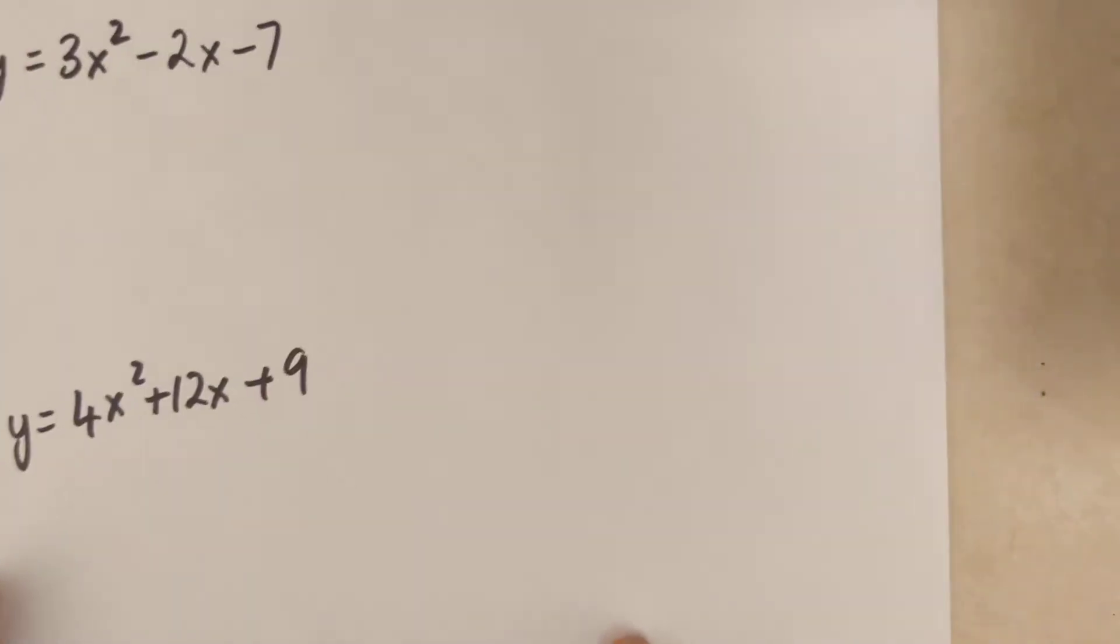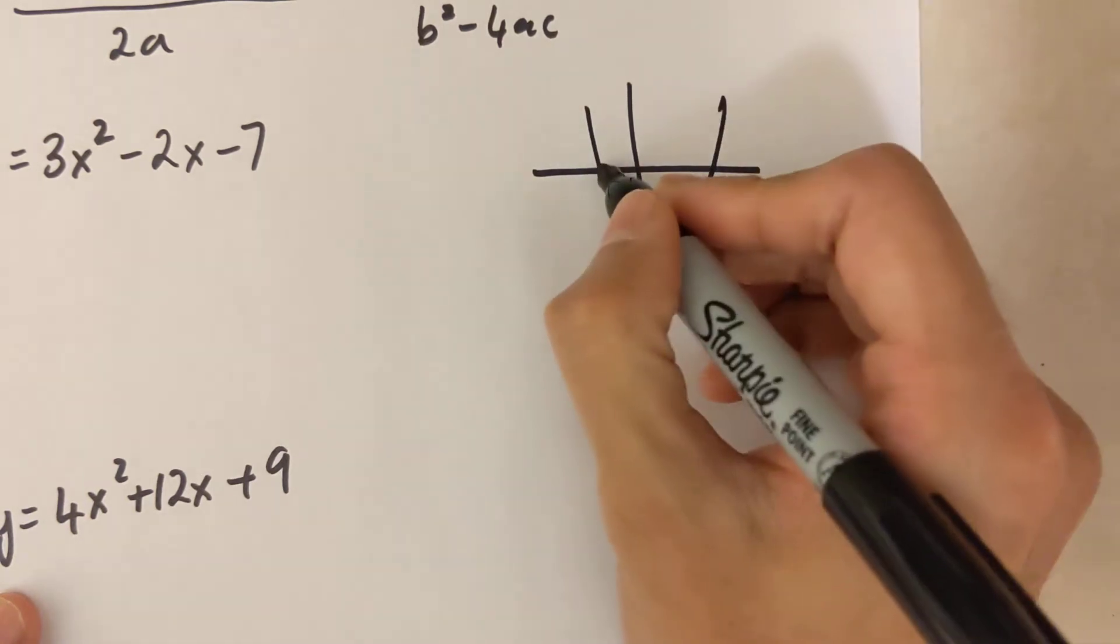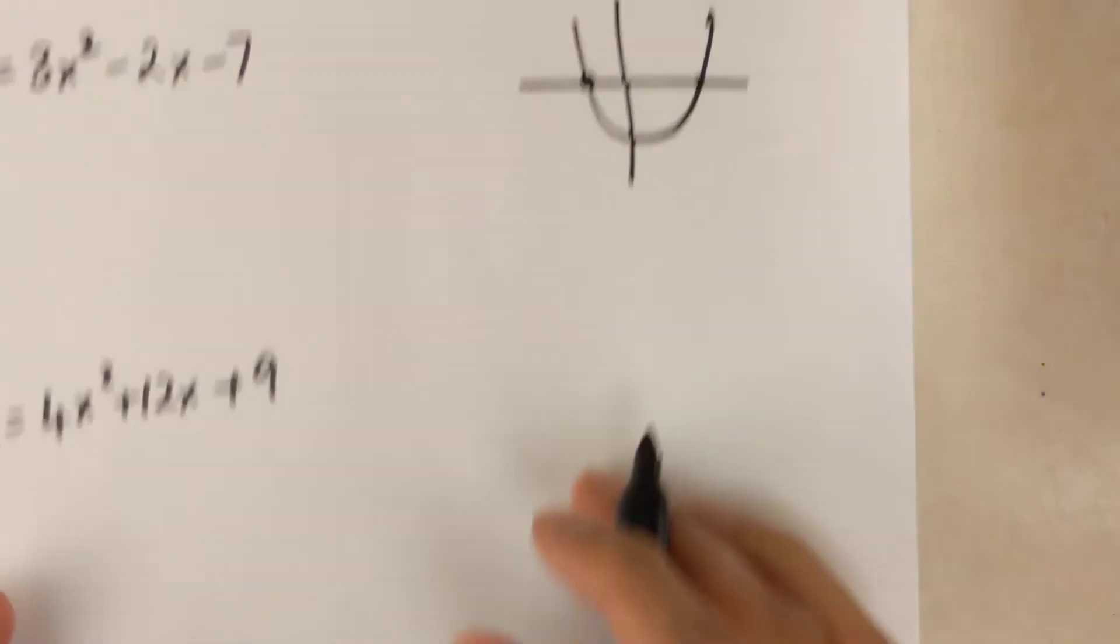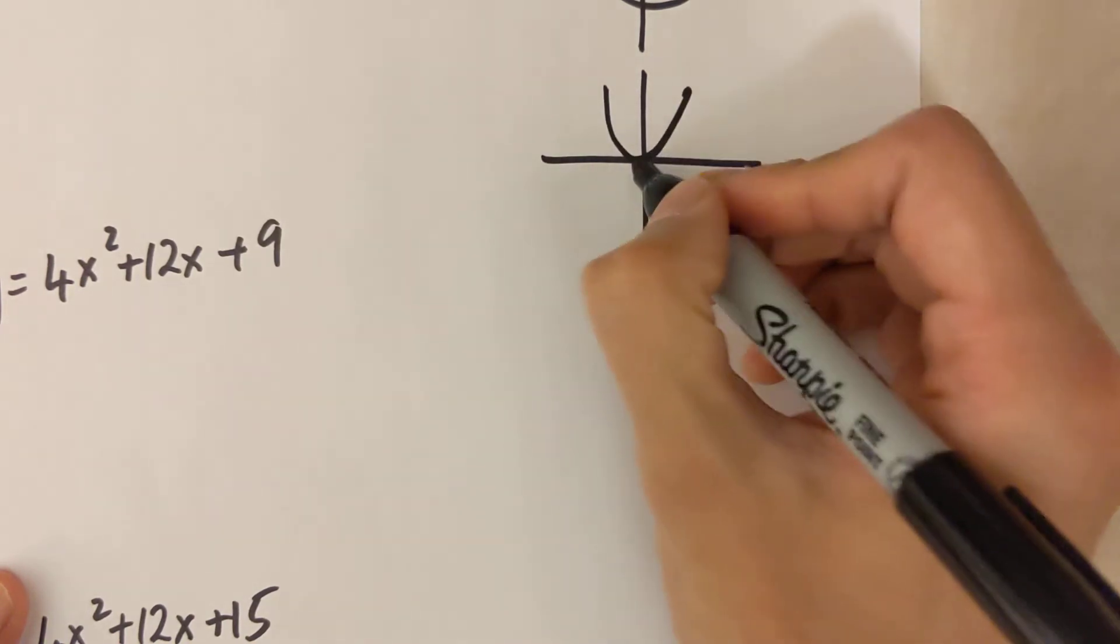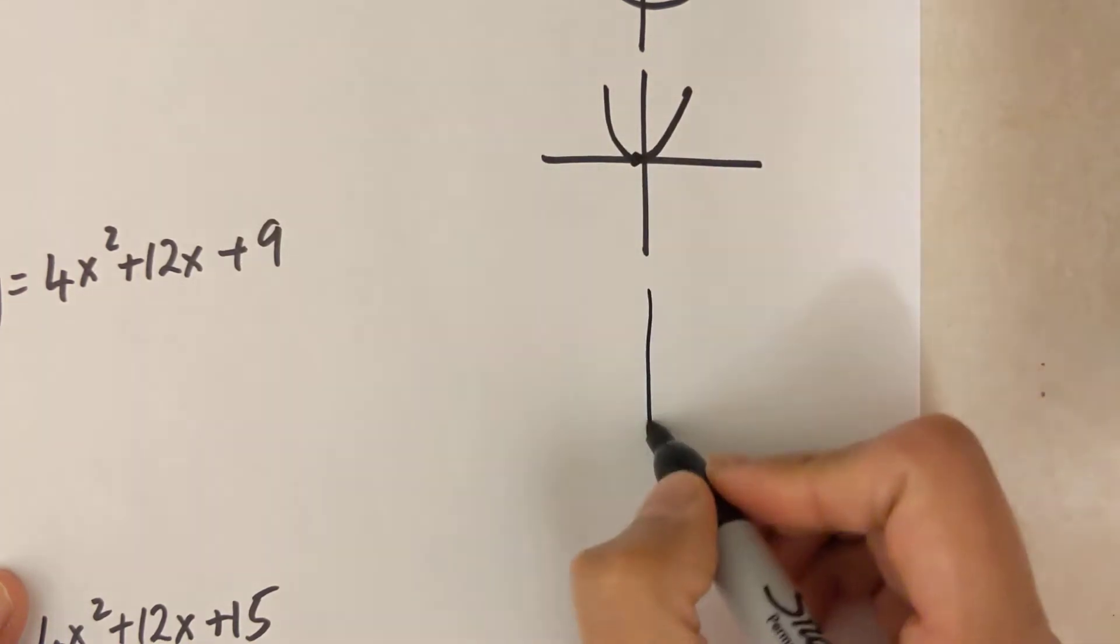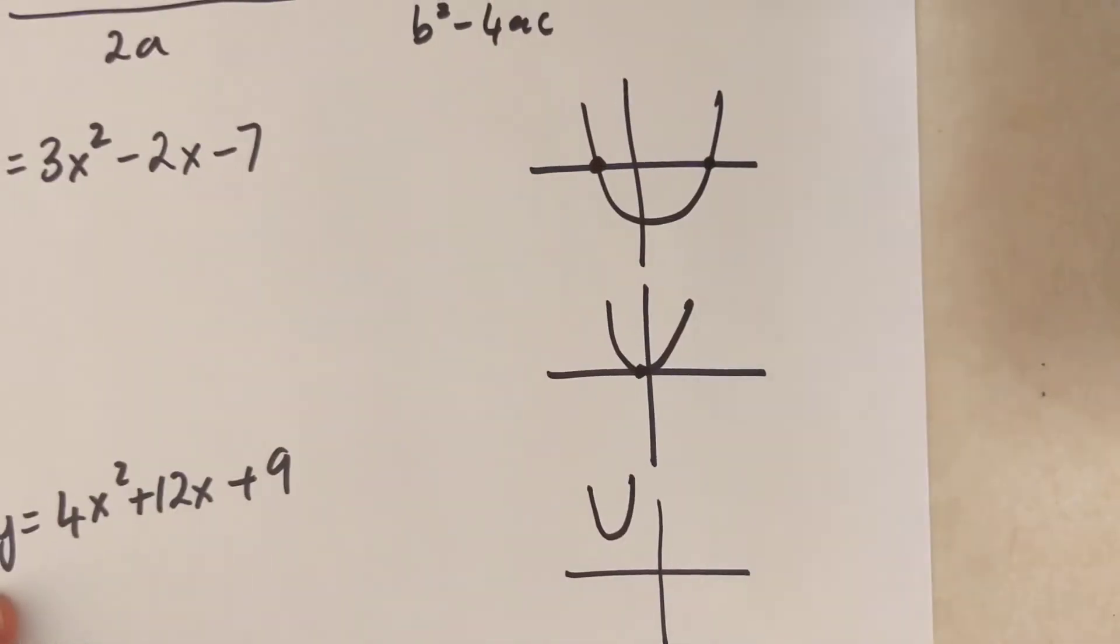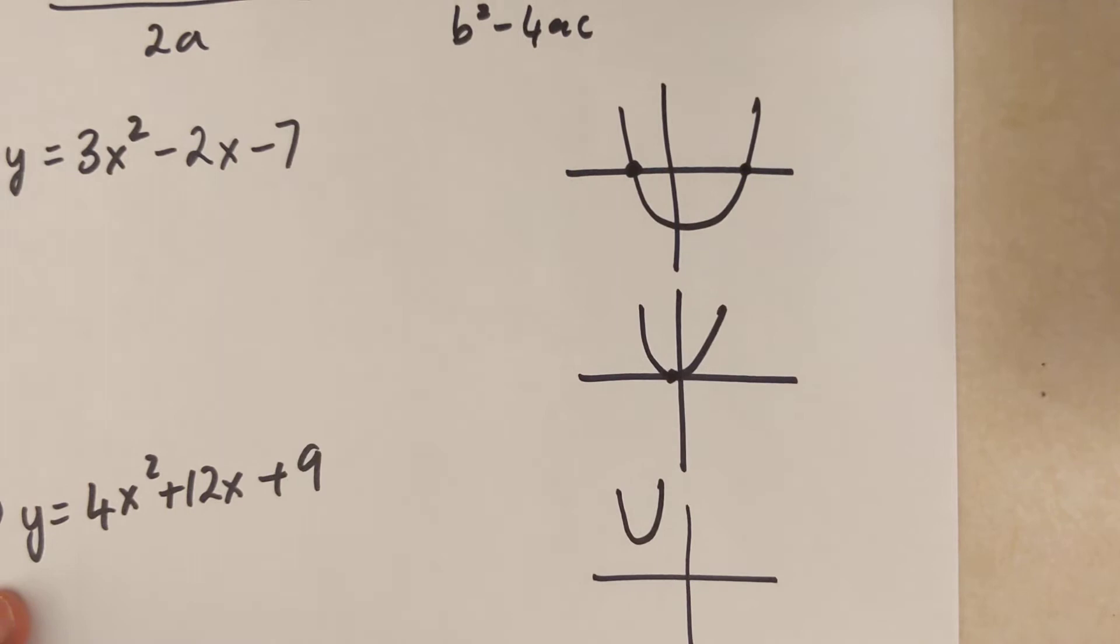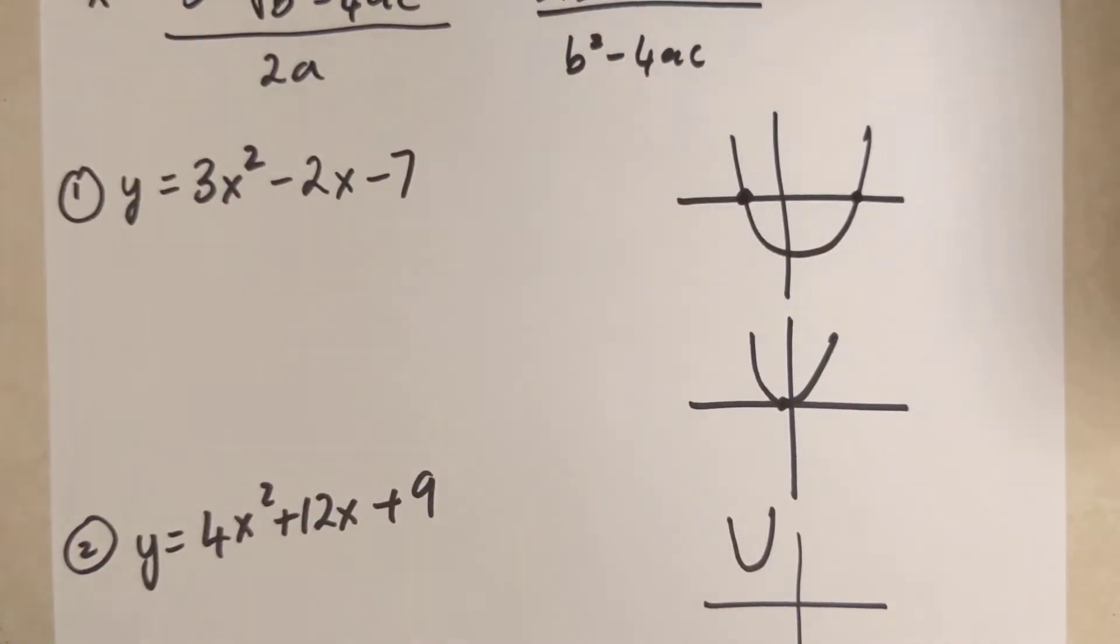Now before I do these questions, really quick I'll show you all the possibilities. You can either have two x-intercepts, one x-intercept, or no x-intercepts. Those are your three possibilities, so using the discriminant you can find all three of them, and I'll show you that in these three questions.